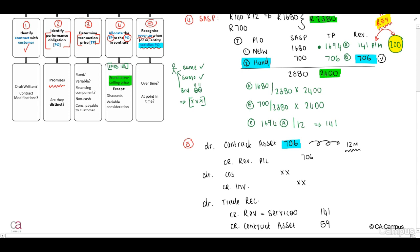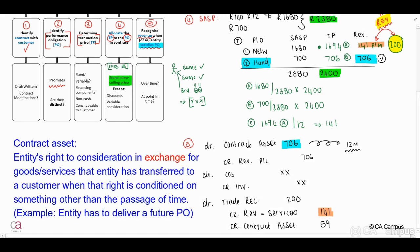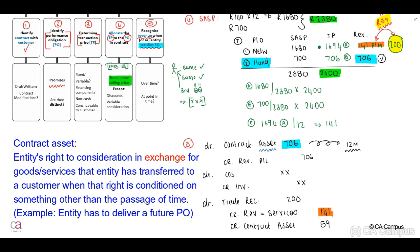Let's quickly talk about our contract asset. This is the entity's right to consideration in exchange for goods or services that the entity has transferred to a customer when that right is conditioned on something other than the passage of time. Therefore, this relates to a future performance — the entity has the right to receive the income relating to this asset, but will only be able to receive all of the income at the end of the 12-month period.